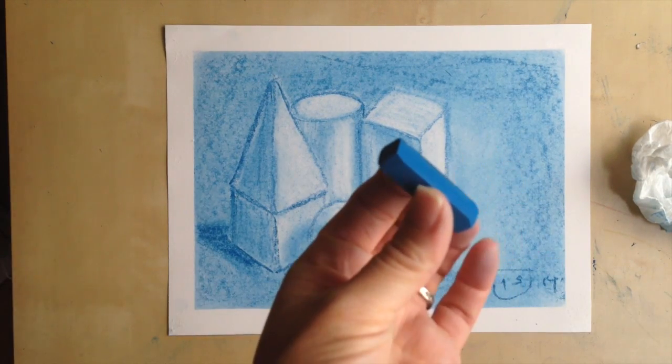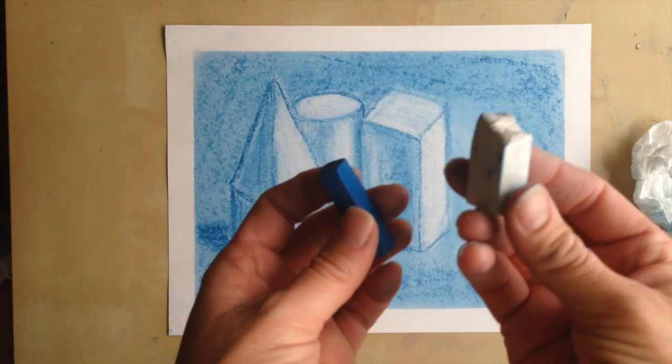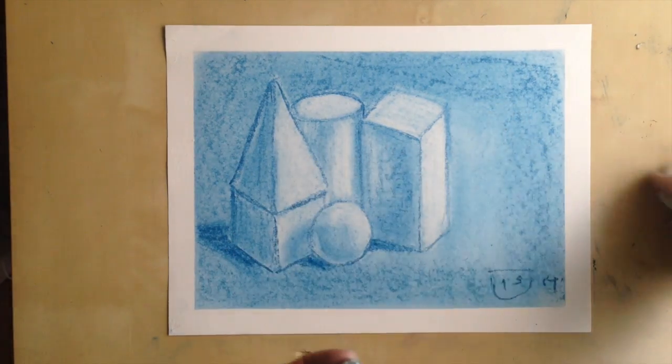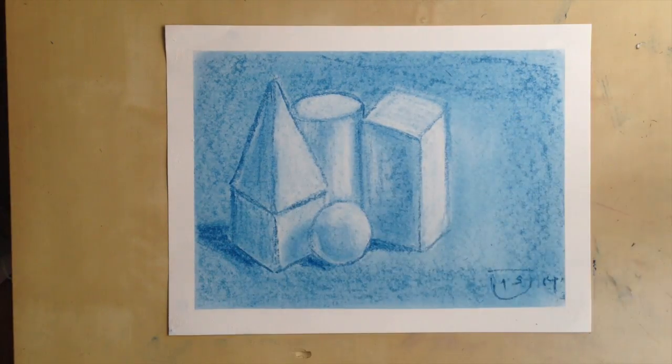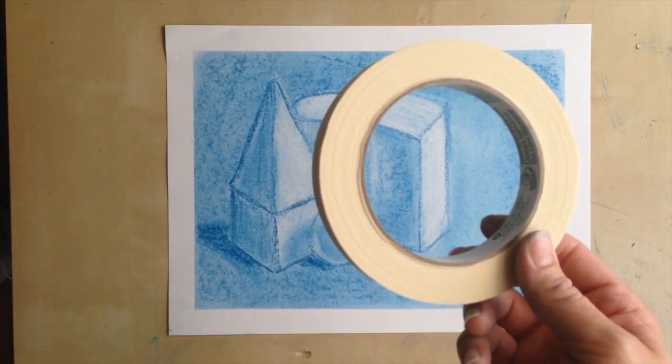All you need is a dark color of chalk, an eraser—you can just use a pencil eraser if that's all you have—tissue paper, paper, and then I just taped my borders with masking tape.